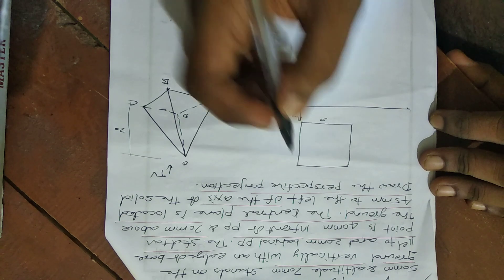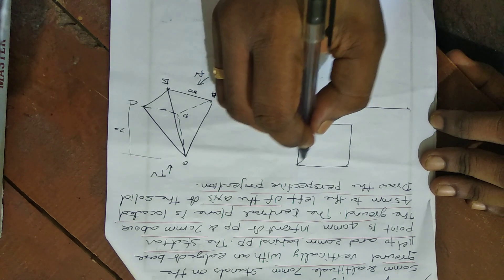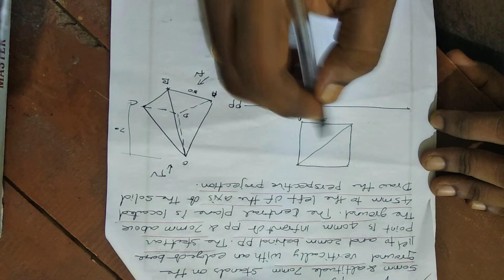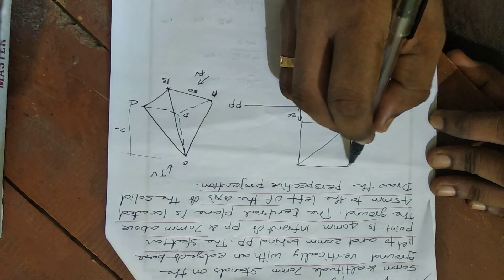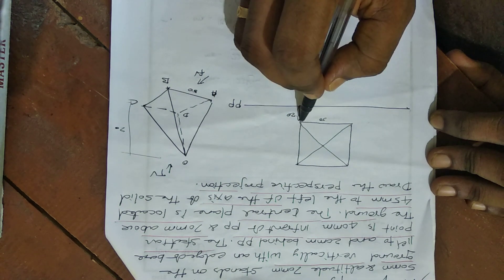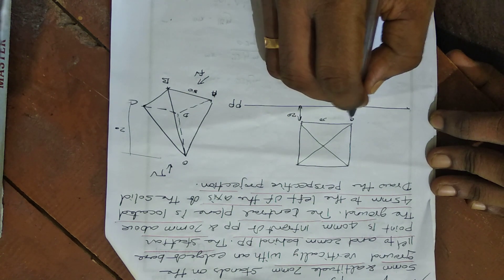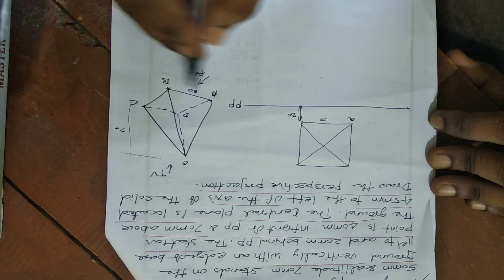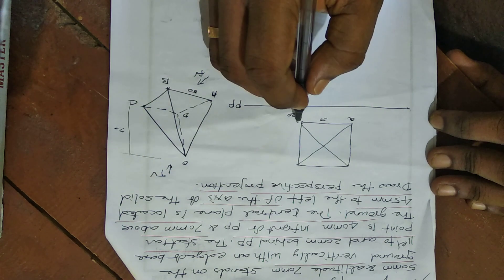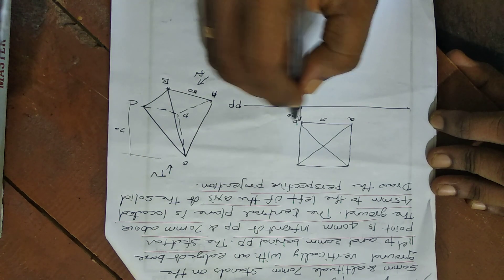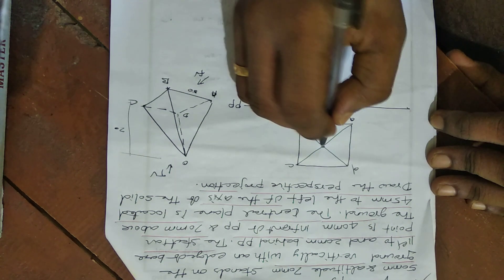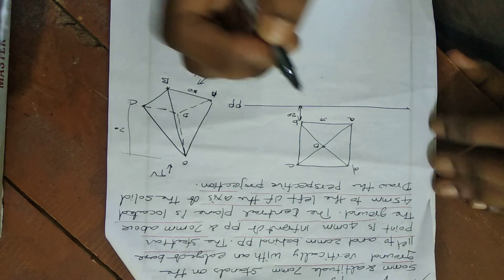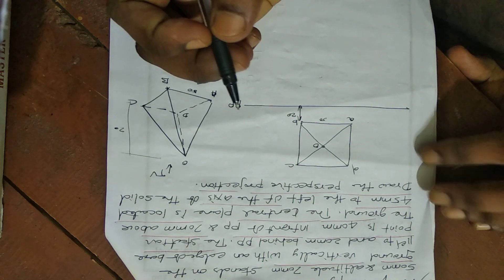This is the top view. The pyramid base is drawn as a square with points marked A, B, C, D, and the centre apex point is marked as O.